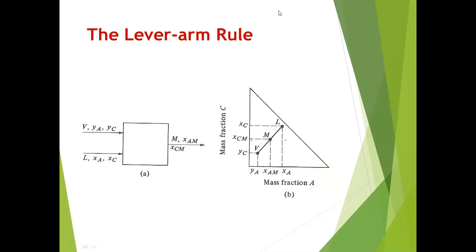The inverse lever arm rule is very graphical in the sense that you're going to measure the lengths of a particular portion of a line segment, as well as other lengths. If you don't want to do actual measurement of these segments, you can also refer to the vertical length relative to the entire vertical length of the triangle, or you can use the horizontal — the horizontal base of the bigger triangle. You don't need the inverse lever arm rule because this can also be done using simple material balance without relying on measurements.